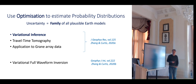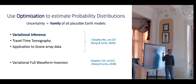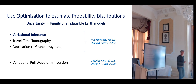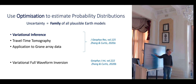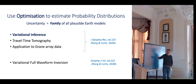What we're after is to parameterize the family of all plausible earth models that are consistent with our data — that's what we're after when we solve Bayesian inference problems. Today I'm going to give you a skeleton background in variational inference and how it works, and how it's different from the other random sampling methods we've been talking about.